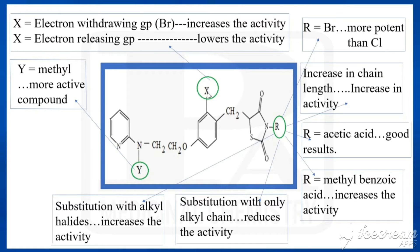Here we have position X. If we are putting an electron-withdrawing group at X — for example, halogen such as bromine — the activity would be increased. If we are putting an electron-releasing group at X, the activity would be lowered and decreased. Now come to Y: if you are putting methyl in the place of Y, we are getting an active compound.